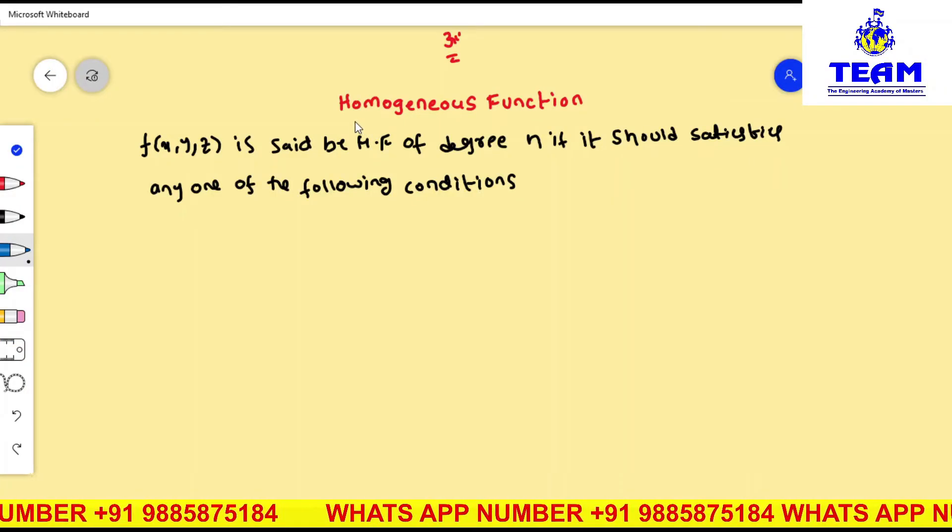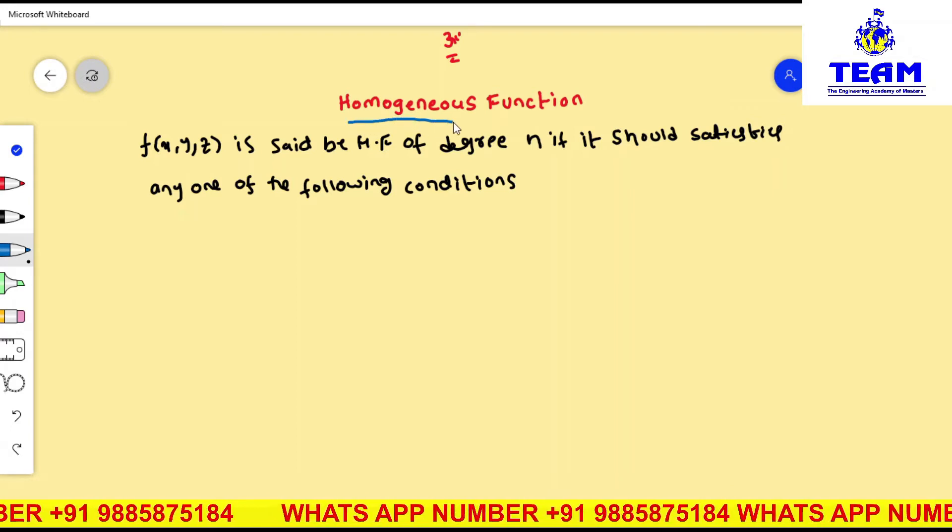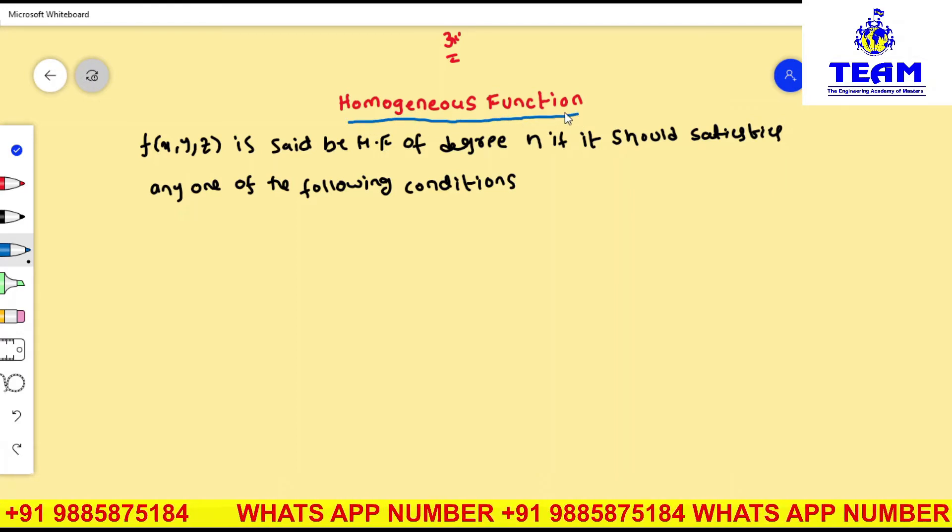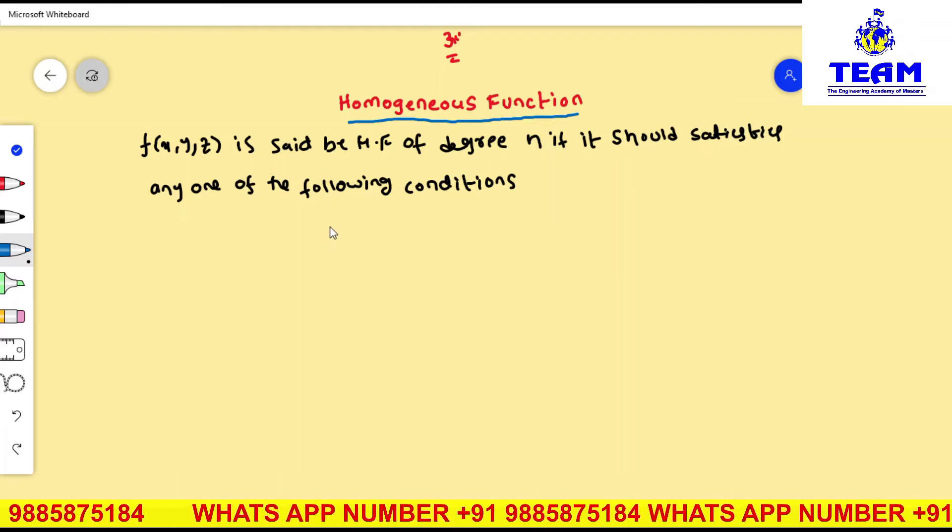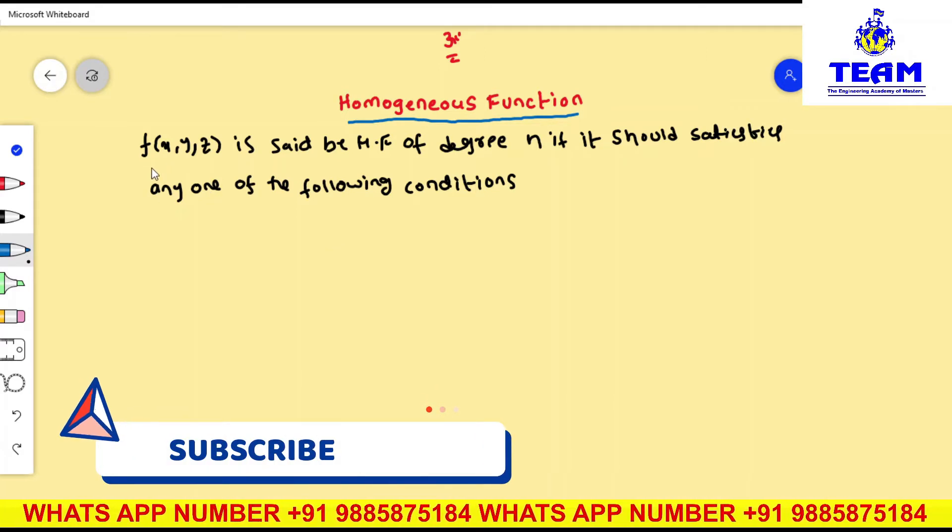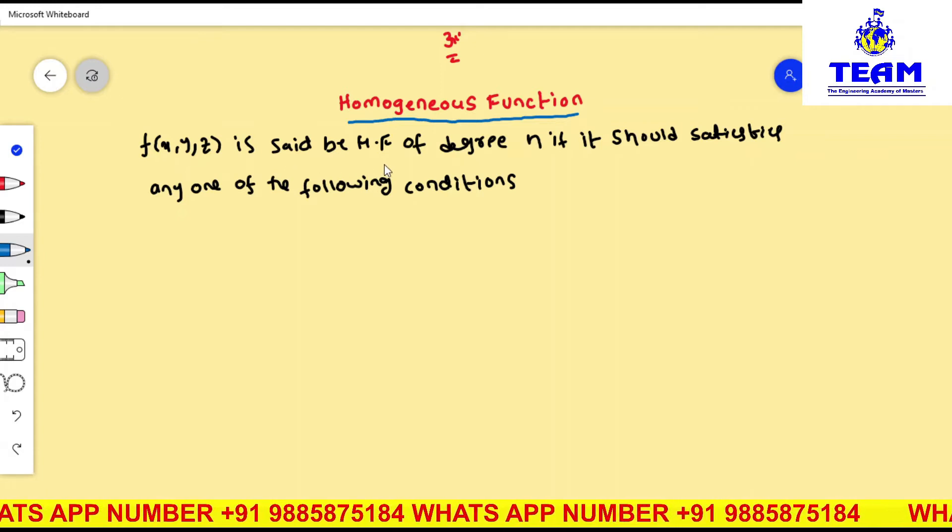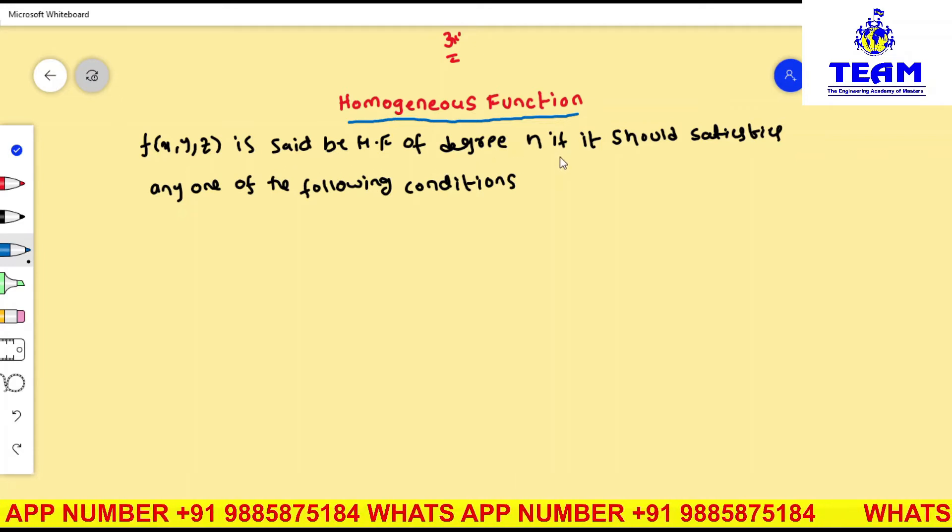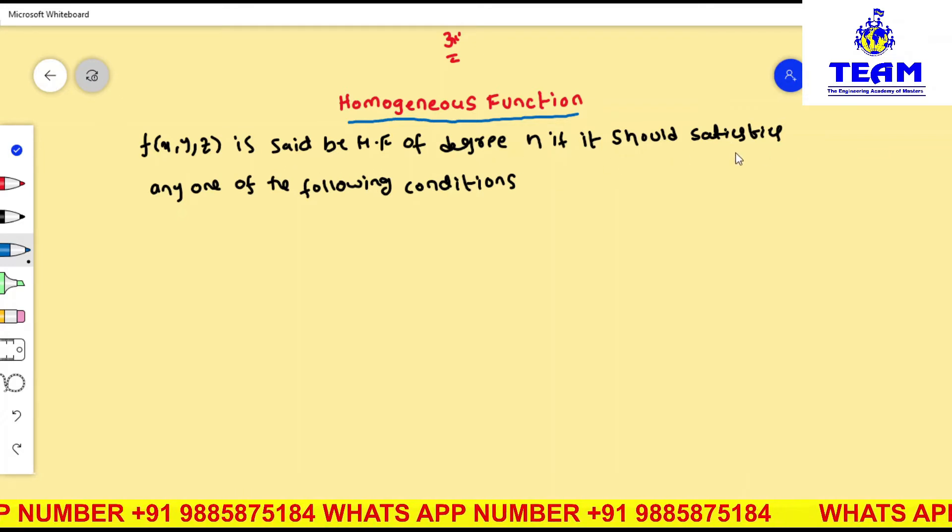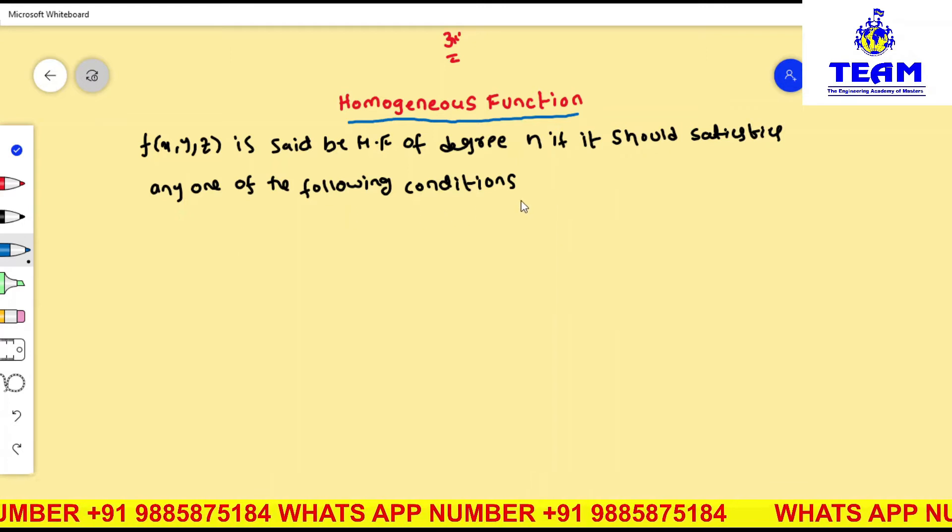Hi friends, in this video we are discussing homogeneous function of degree n for three independent variables. Coming to the definition, a function f(x, y, z) is said to be homogeneous function of degree n if it should satisfy any one of the following conditions.